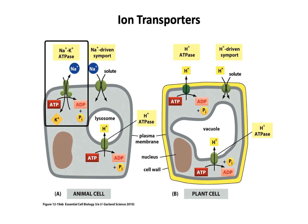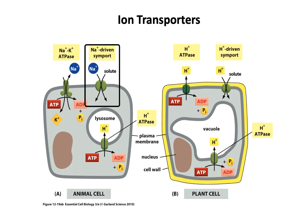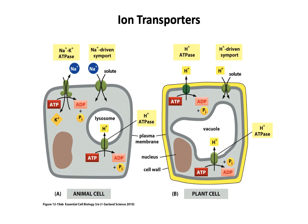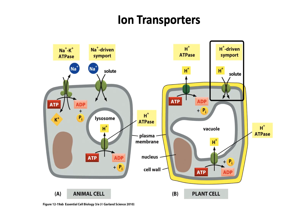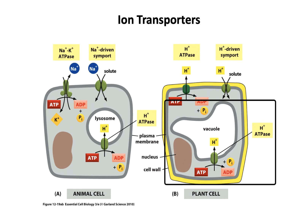There are also proton ATPase transporters requiring ATP — important to acidify the lysosome. In plants, primarily proton pumps: a proton pump that pumps protons out of the cell requiring ATP, a symport that takes protons and solutes into the plant cell, and to acidify the vacuole — which is similar to a lysosome in some ways — there's also a proton ATPase pump requiring ATP to pump those protons against the gradient into the vacuole, acidifying it.